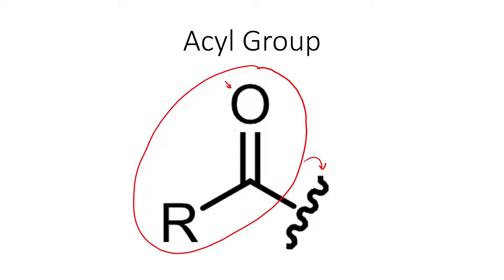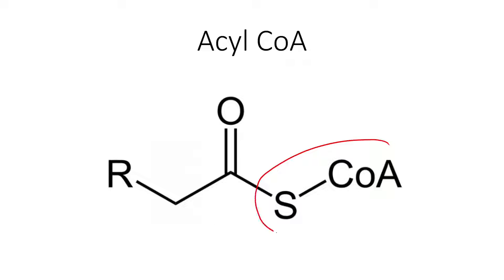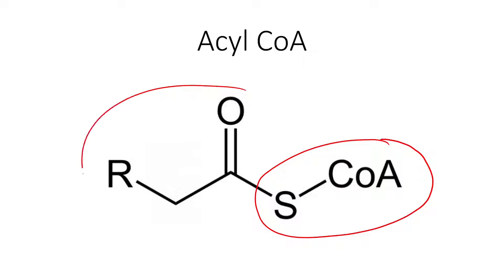Within the acyl group, we have an oxygen double bonded to a carbon, which is also bonded to an R group. The R just represents a hydrocarbon chain - it could be of any length. Now, if the R group happens to be just a single carbon or a methyl group, then this is a special acyl group that we call an acetyl group. So an acetyl group is just a very special type of acyl group where the R is just a methyl group. An acyl-CoA is when the CoA is attached to our acyl group. Notice we can call this an acyl group because we have one carbon and an R, which guarantees at least one more carbon, eliminating the possibility of this being an acetyl group.